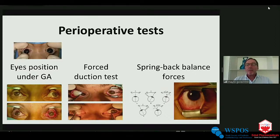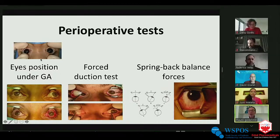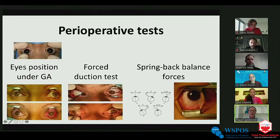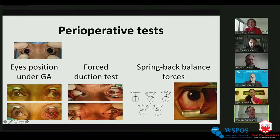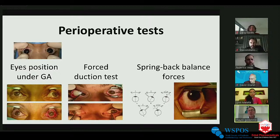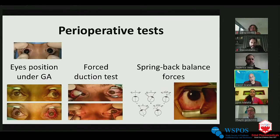An important perioperative consideration: the eye position under general anesthesia. If you operate on a patient with esotropia, under general anesthesia their eyes are aligned — meaning by the end of surgery the eye should be in a slight exodeviation or abduction position. Repeat the spring-back balance test after each step of surgery: after opening the conjunctiva, dissecting the muscle, and reattaching it. The forced duction test video shows a tight muscle before surgery, still tight after conjunctival recession, improved after the muscle is hooked and recessed, and then normal — at which point you can leave the muscle.